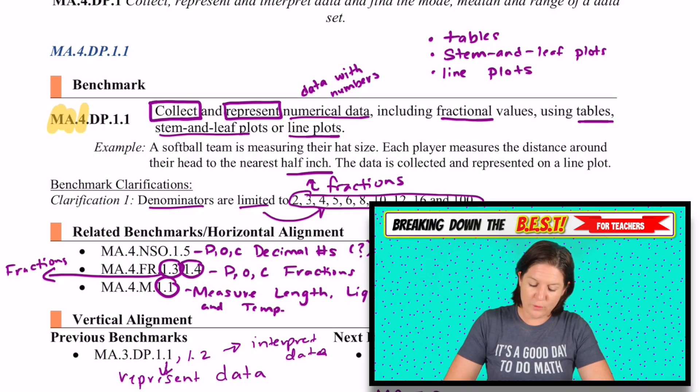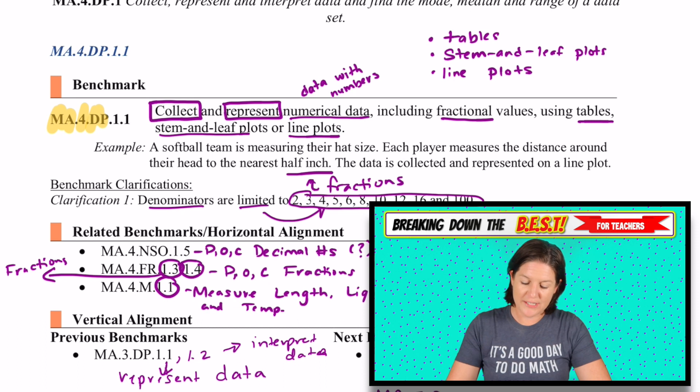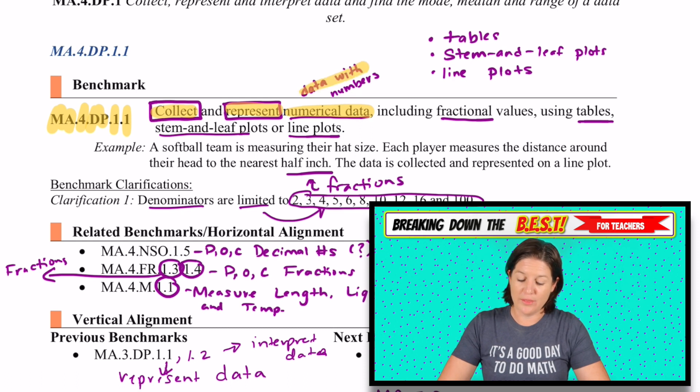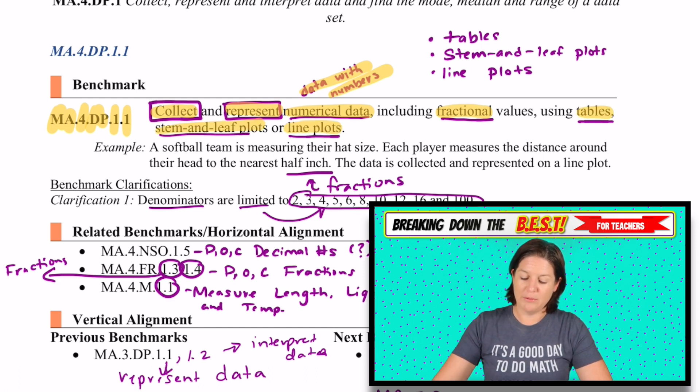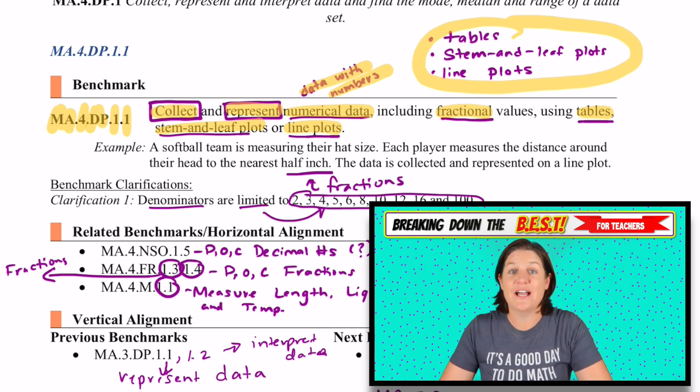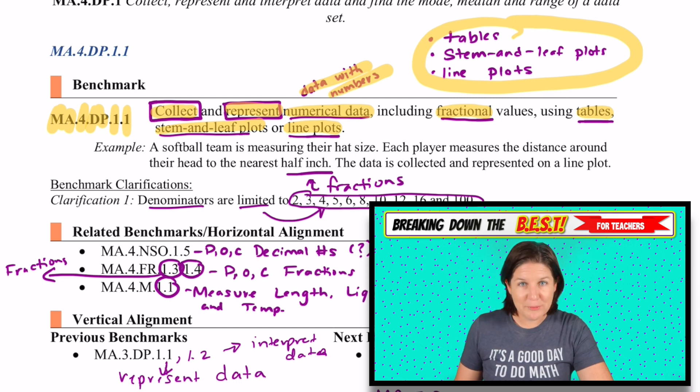Today's standard is MA.4.DP, that stands for Data Analysis and Probability, 1.1. And this standard says to collect and represent numerical data, that means data with numbers, including fractional values using tables, stem-and-leaf plots, or line plots. So these are the three that we're focusing on: tables, stem-and-leaf plots, and line plots. And if you are anything like me, I had no idea what a stem-and-leaf plot was until I studied it. So we will learn together.